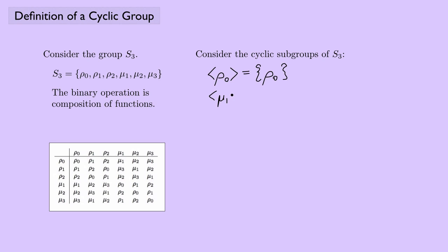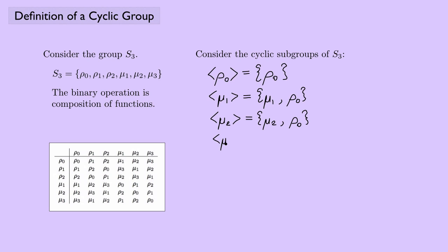Let's look at the flips. For mu 1, we have mu 1 composed with mu 1 — that's flipping and flipping back, so we expect the identity. And if you look at the table, mu 1 composed with mu 1 is indeed the identity. The same thing happens for mu 2 and mu 3: mu 2 composed with mu 2 gives the identity, and mu 3 composed with mu 3 gives the identity.